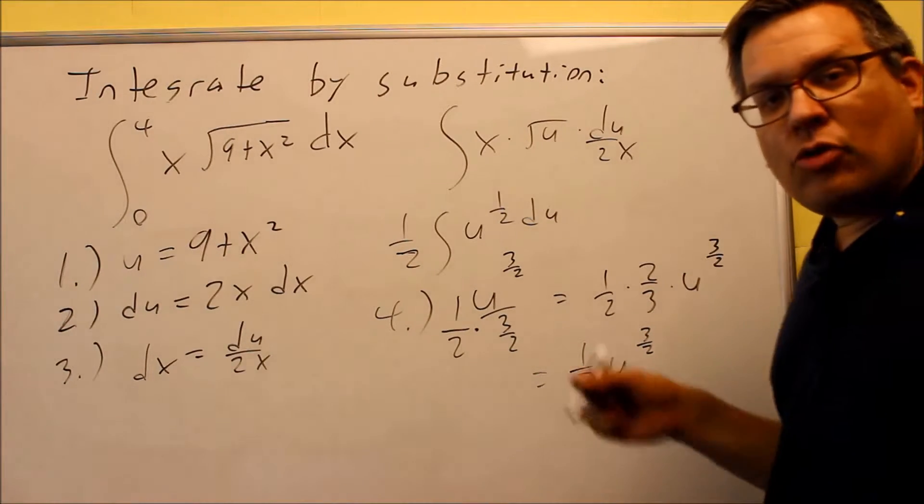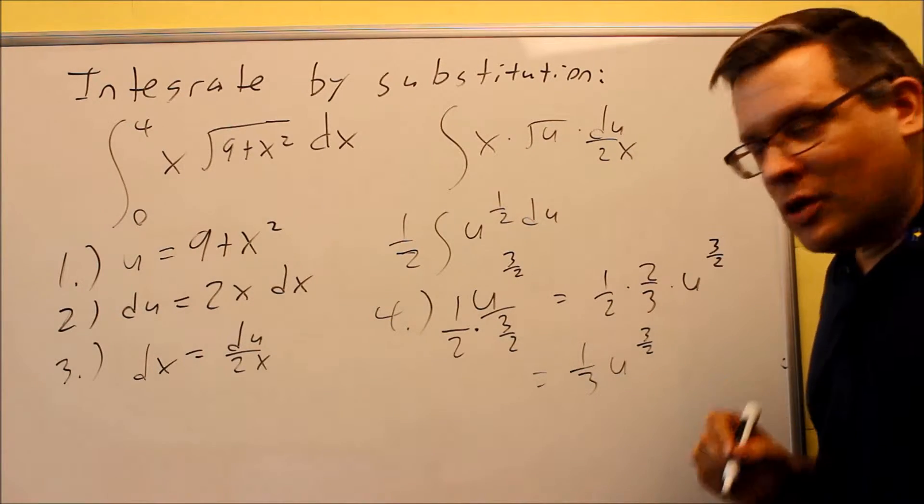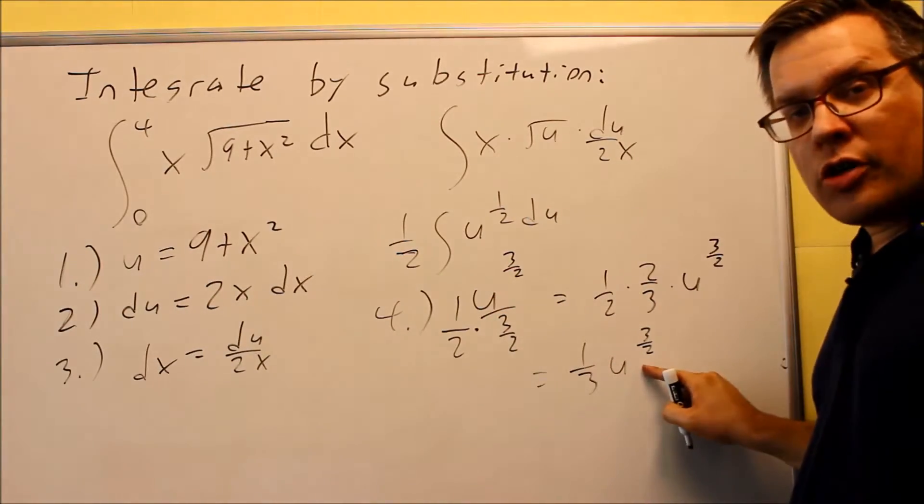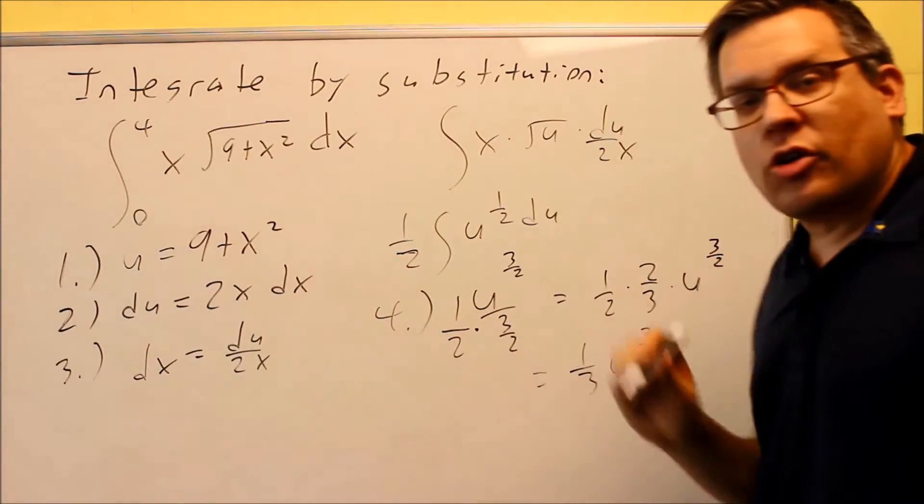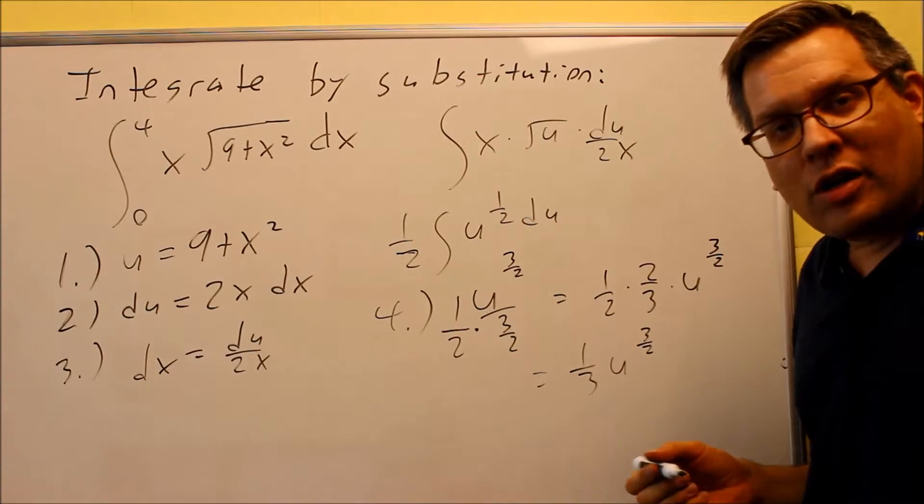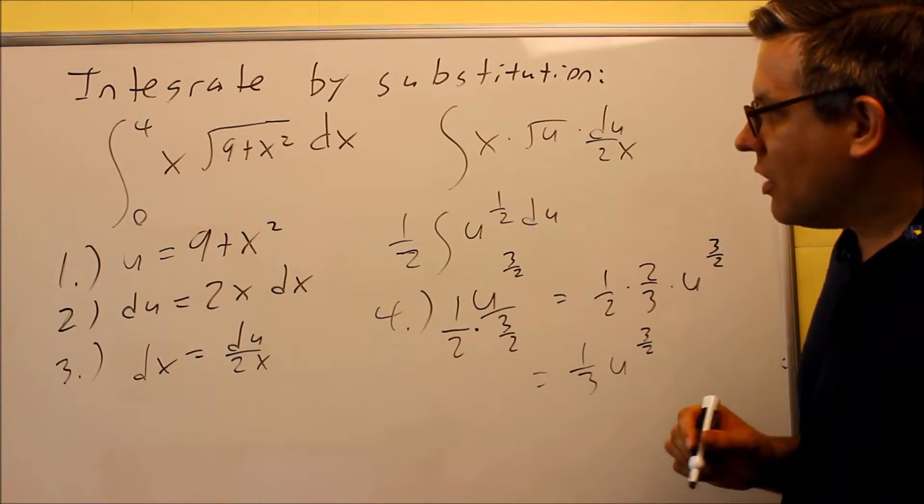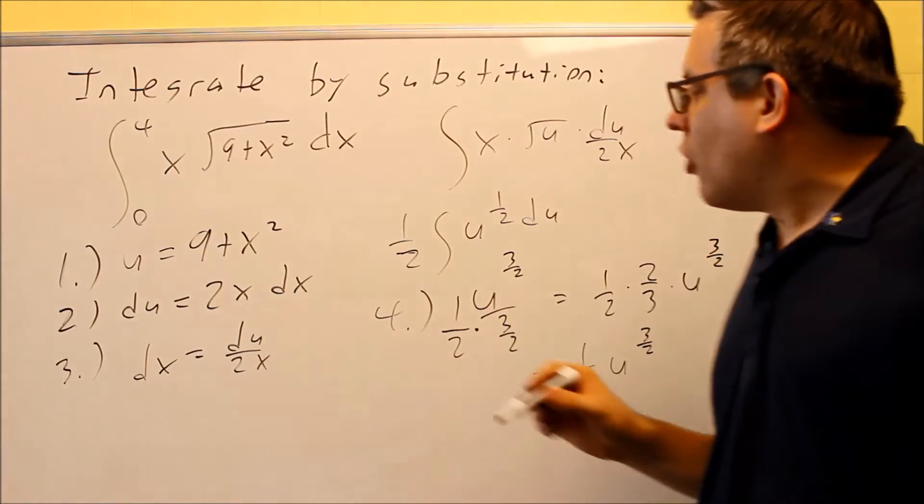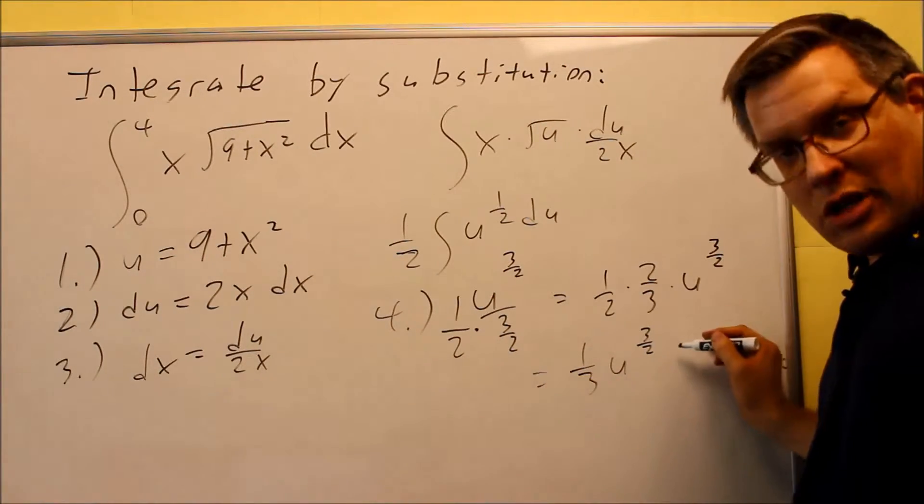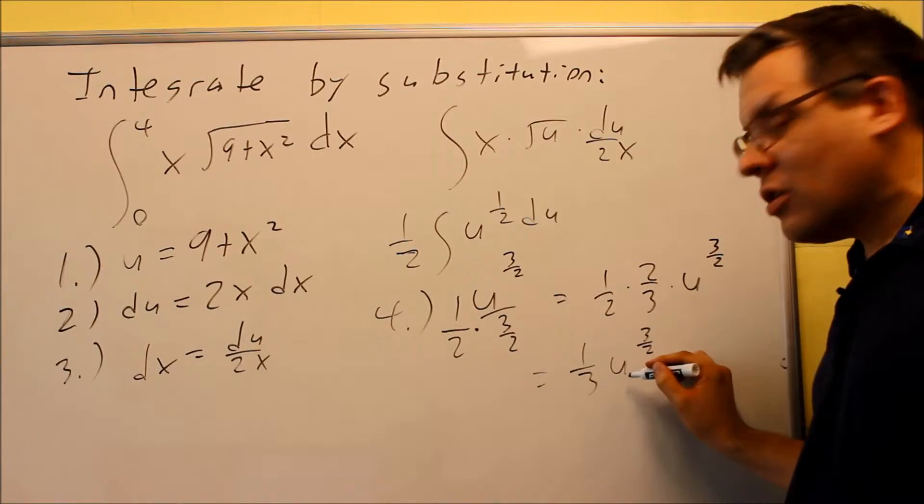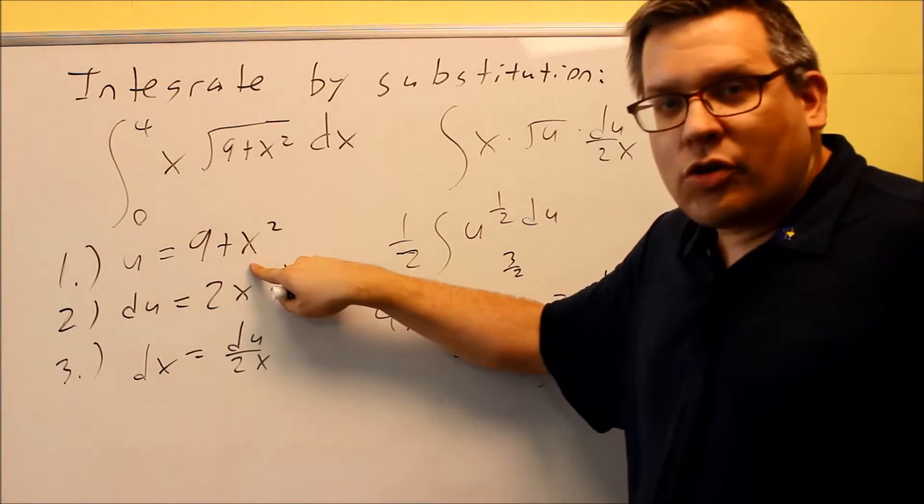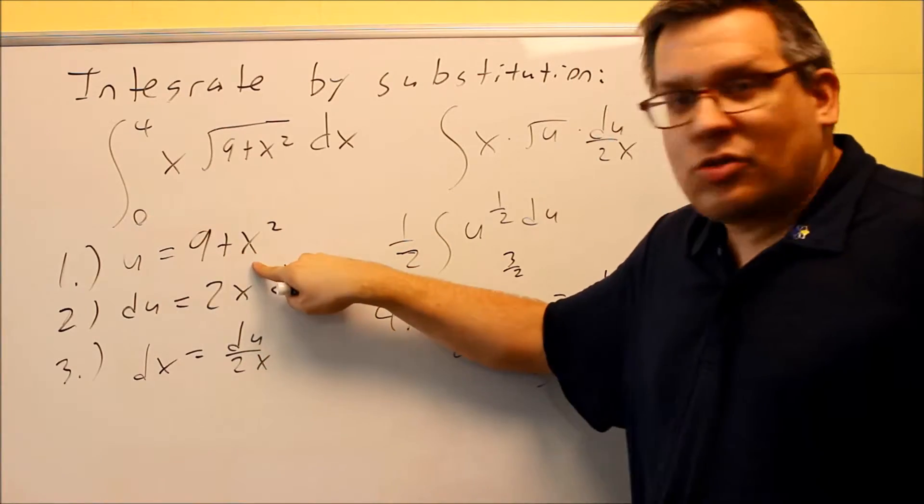Now at this point, you have two different options for finishing this problem. You can plug the u back in, which is what we're going to do, and we're going to use the original zero and four, and we'll get the answer that way. The other way to do it is you can use your definition for u to convert the zero and four over into u's, and then you can plug those in here. In other words, put zero in here, you get the bottom limit will turn into a nine. You can put a four in here, the top limit turns into a twenty-five.